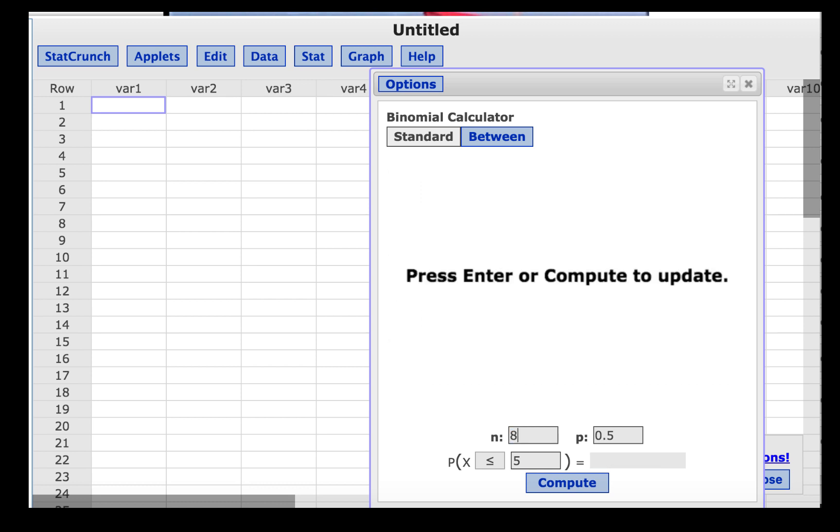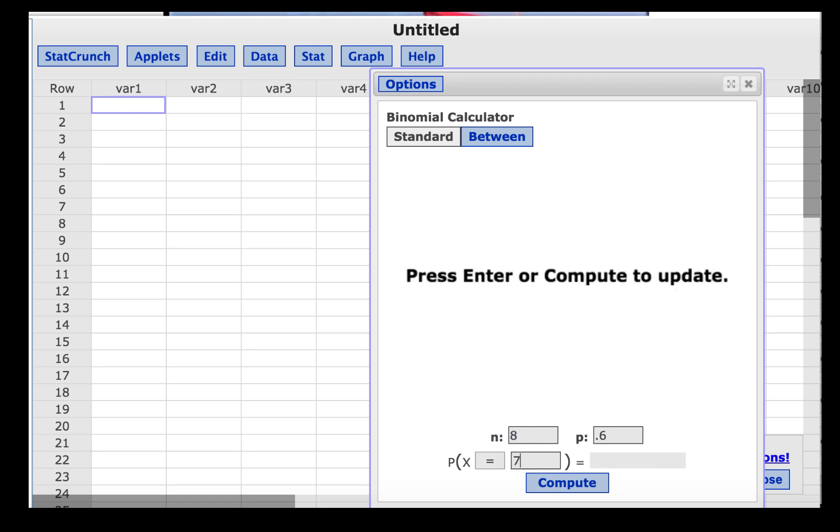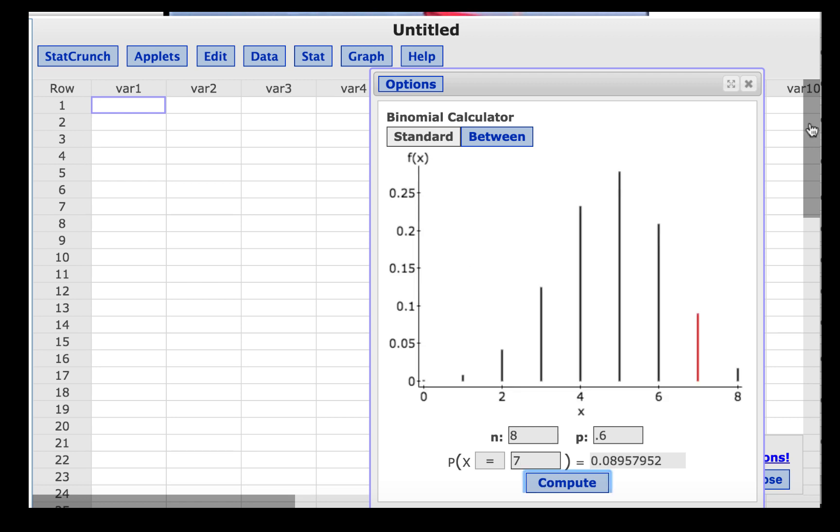We had 8 independent trials. The probability of a success is 0.6. And we were to find the probability that exactly, so equal to, 7 consumers that were randomly selected would recognize the brand name. And we find that probability to be 0.090 if we round to 3 decimal places.